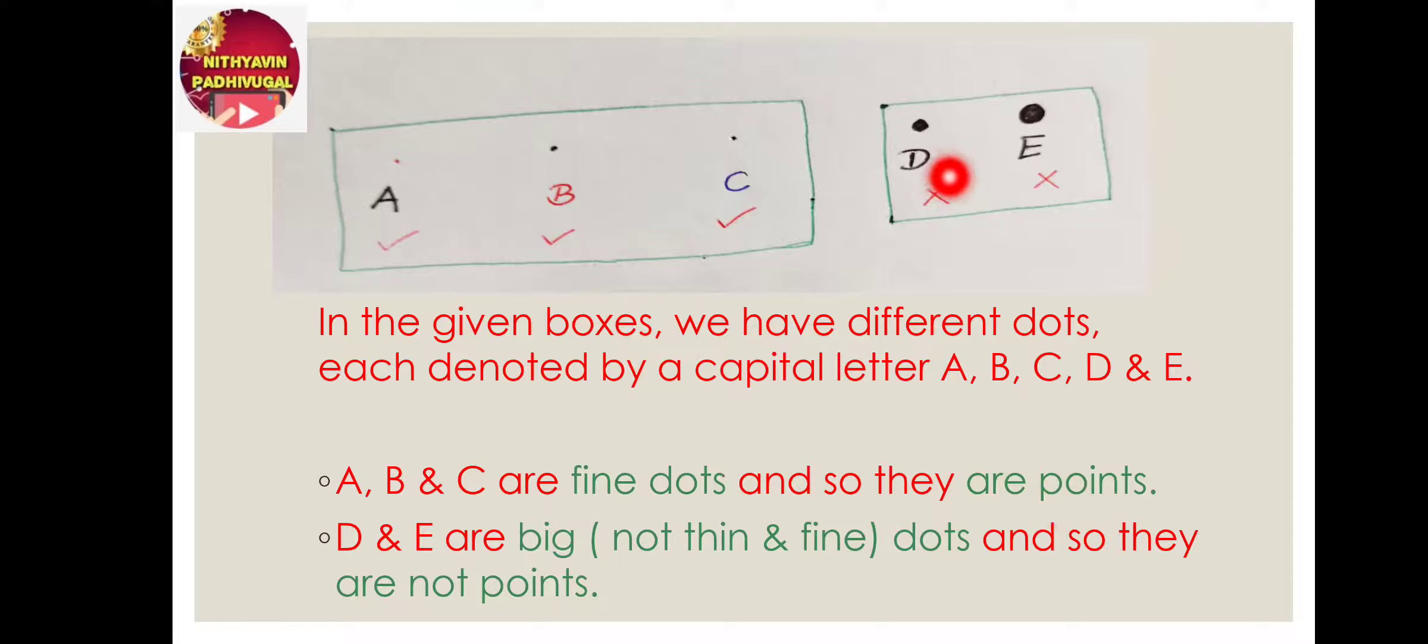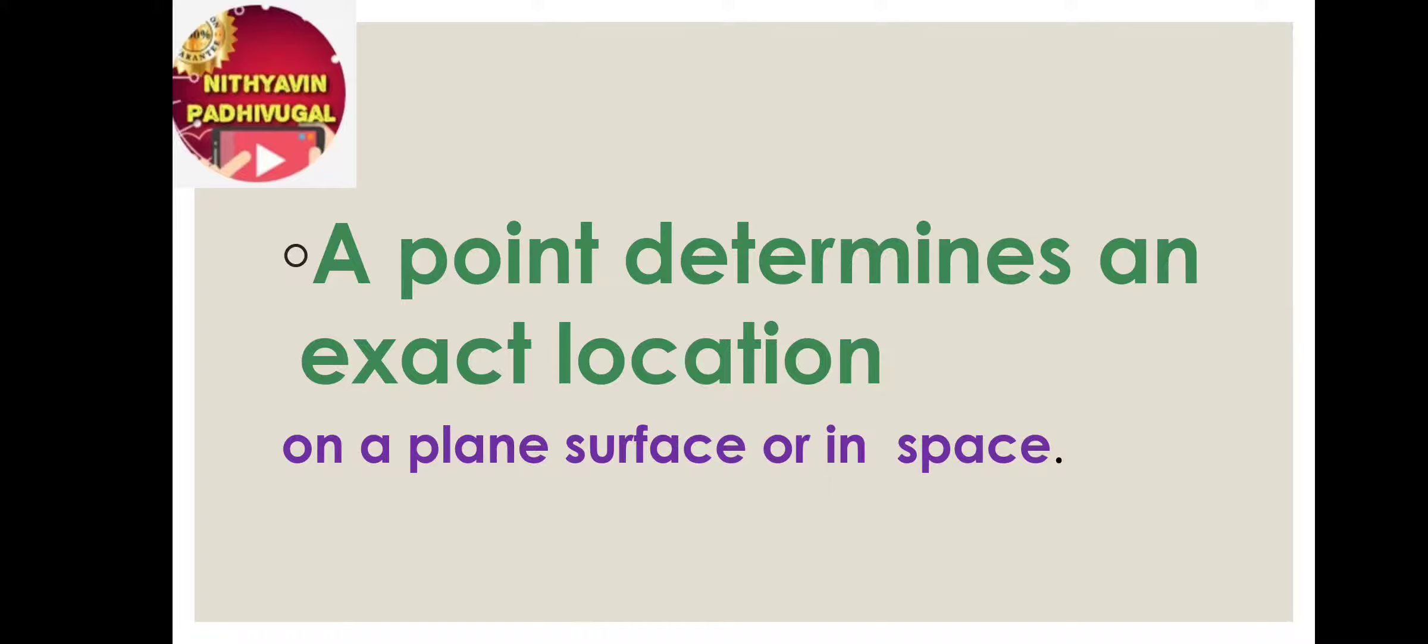But D and E are big; they are not thin and fine, so these dots are not points. A point determines an exact location on a plane surface, or a point determines an exact location in space.